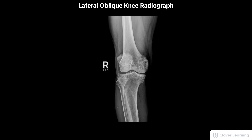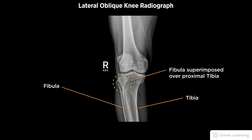On the lateral oblique view, the tibia and the fibula are closed. A diagnostic lateral oblique rotation knee radiograph must be free of motion, demonstrating the lateral oblique view of the tibia and fibula with the fibula superimposed over the proximal tibia, and proper visualization of soft tissue and bony detail.